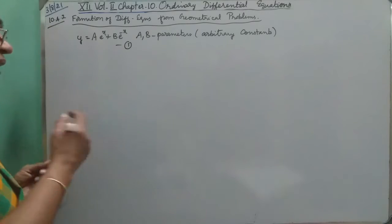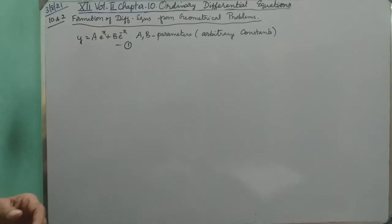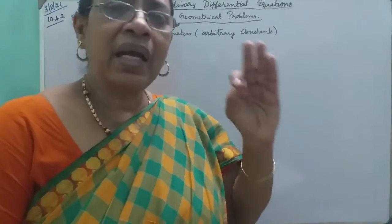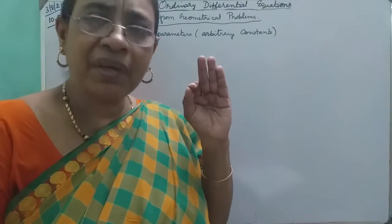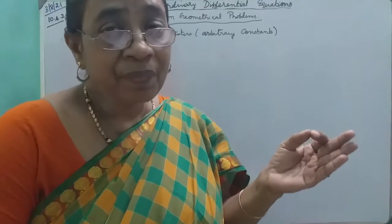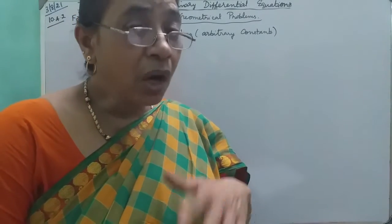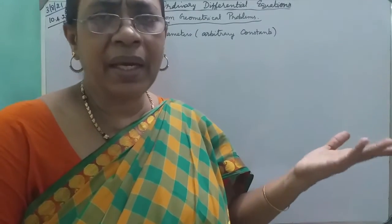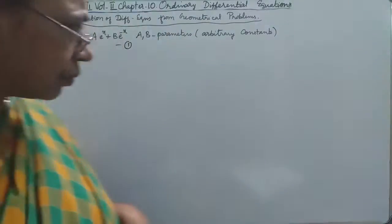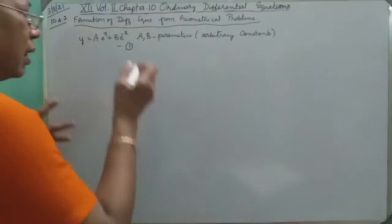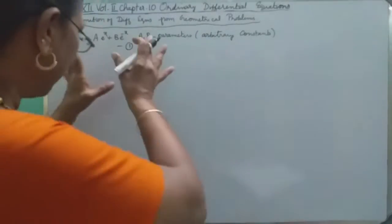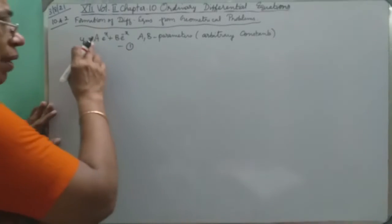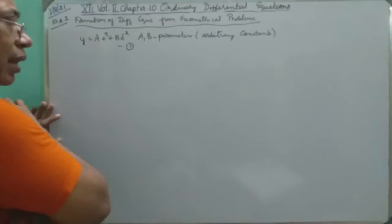So now y = ae^x + be^(-x). It is not a single equation. Actually this represents a family of curves where a and b are parameters — arbitrary constants. They can take any real value. Now, if we have a family, then we have a differential equation. The number of arbitrary constants we have is two.